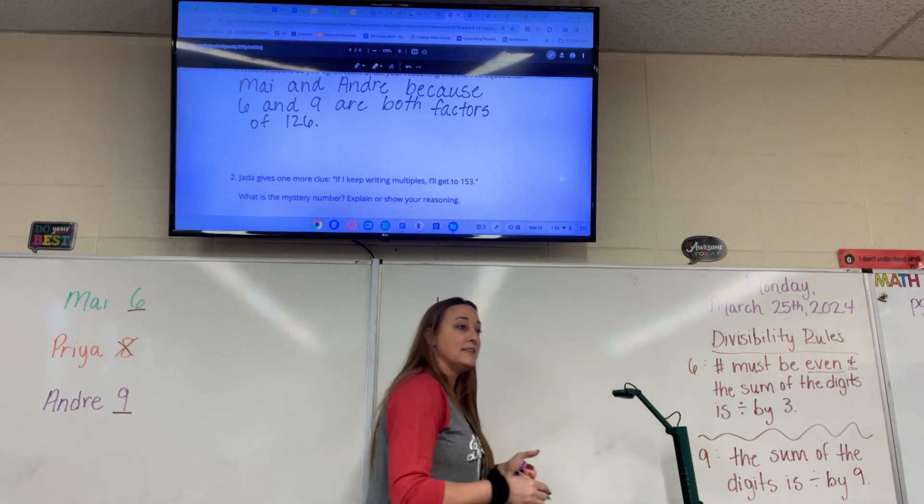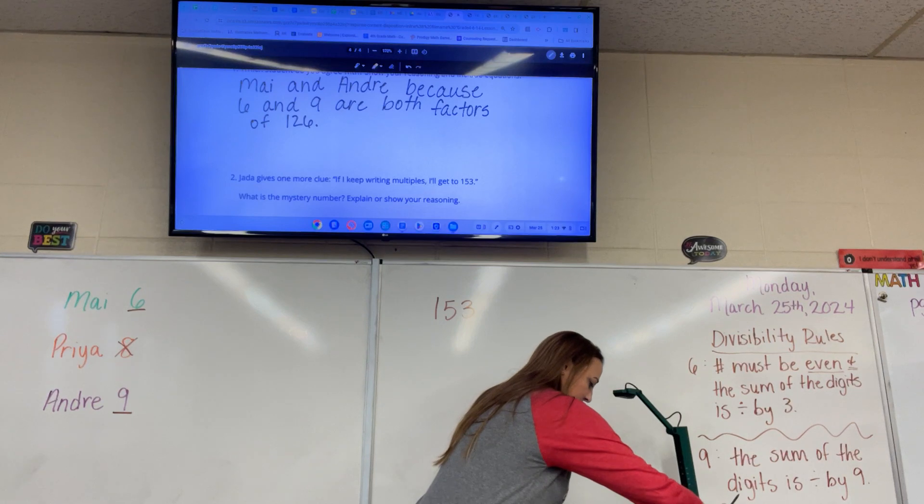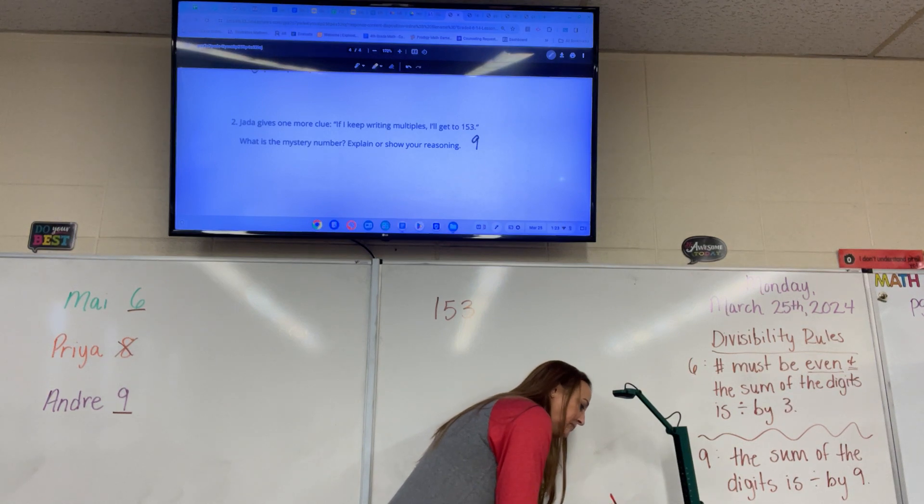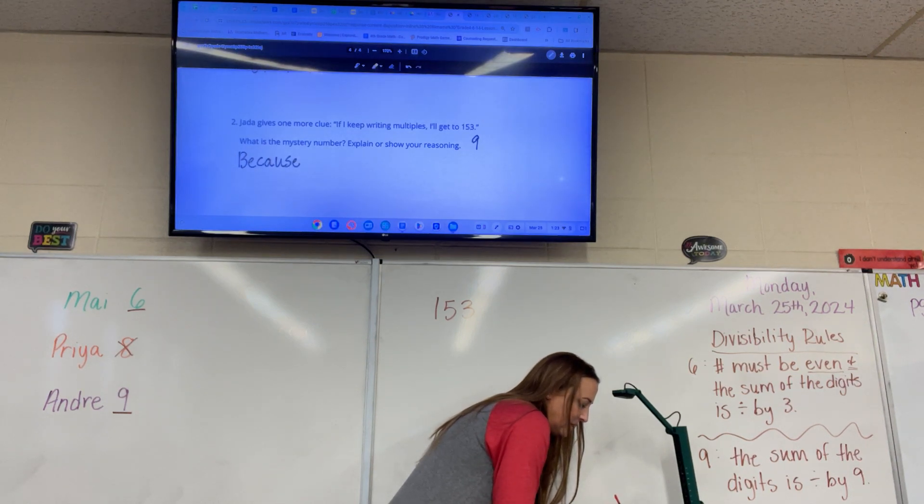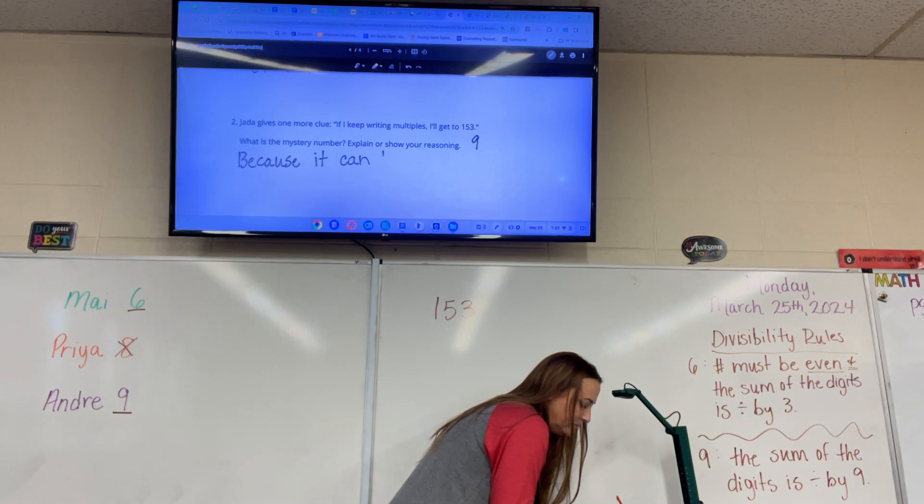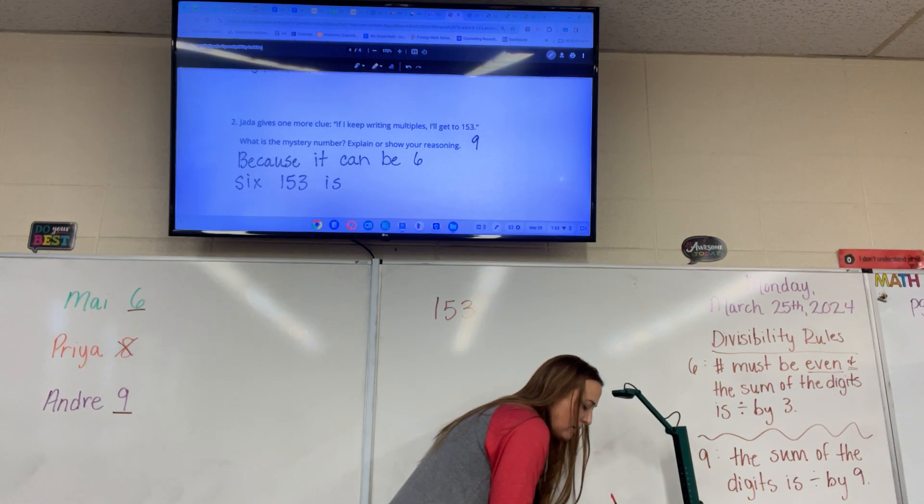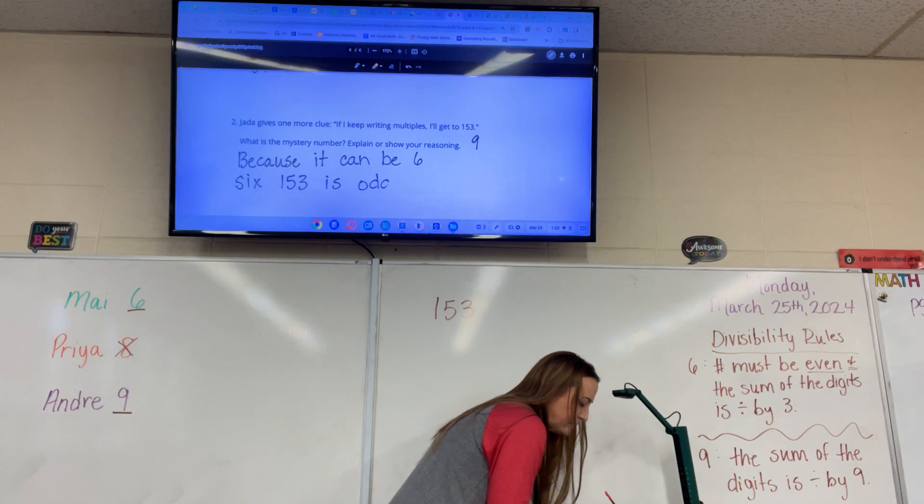153 is odd. Make sense. You're right Olivia. Good work. Okay. So the mystery number has to be nine because it can't be six since 153 is odd. Okay.